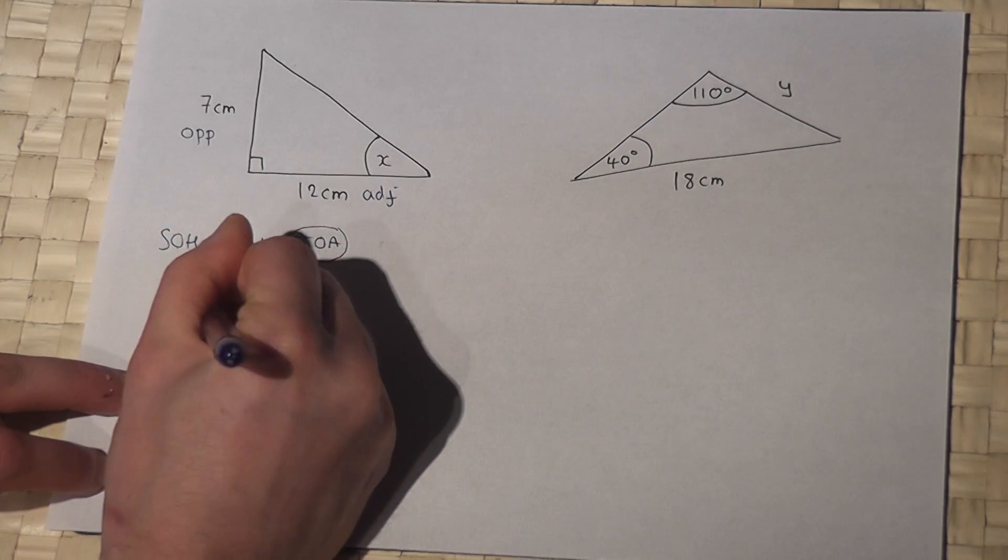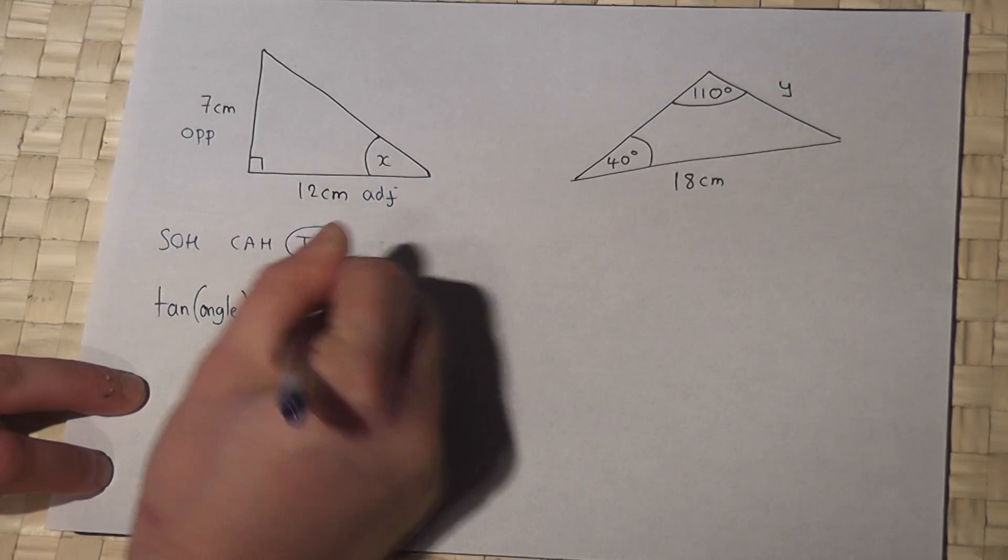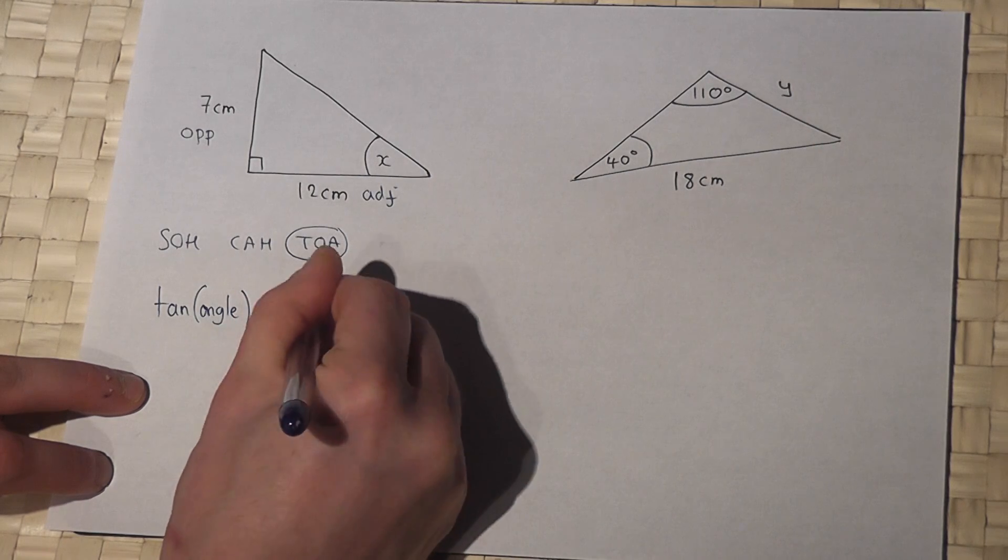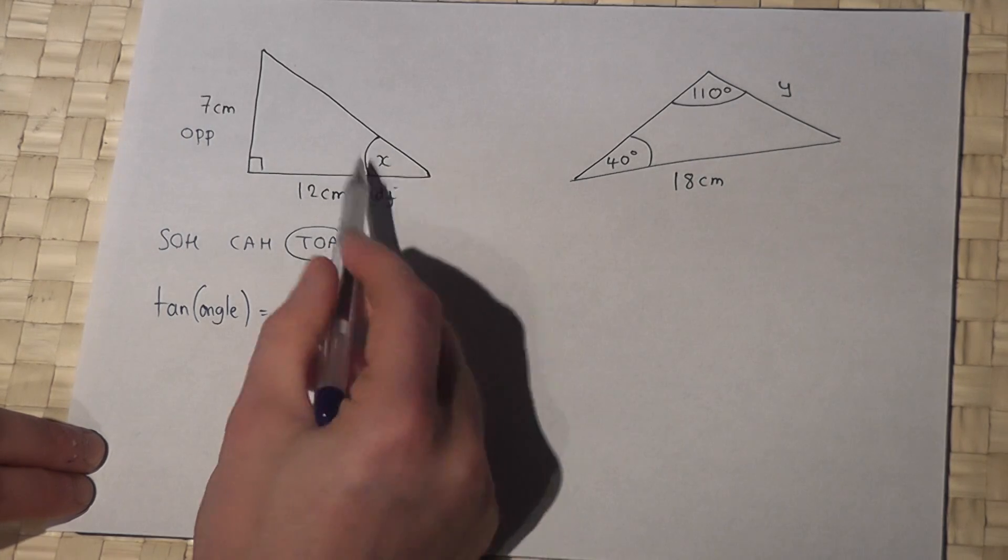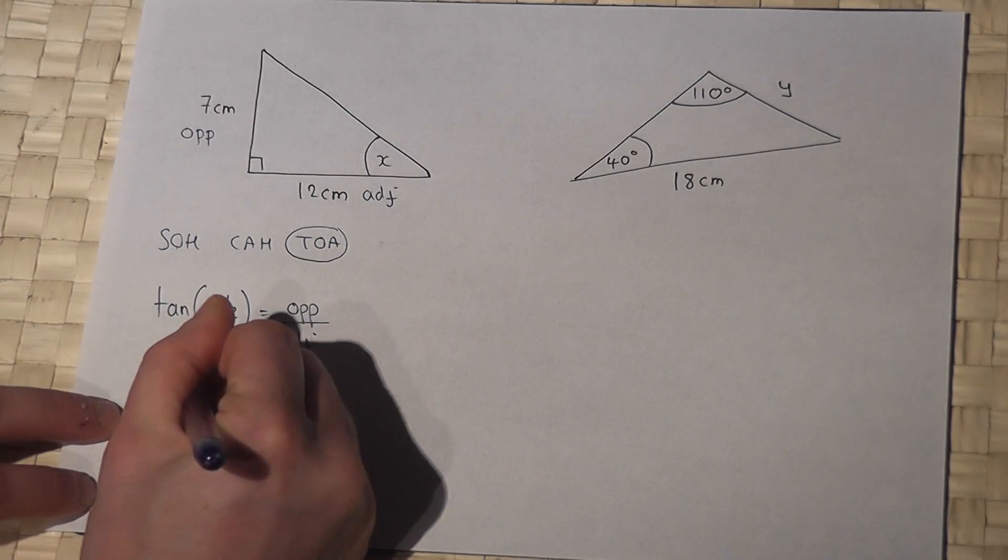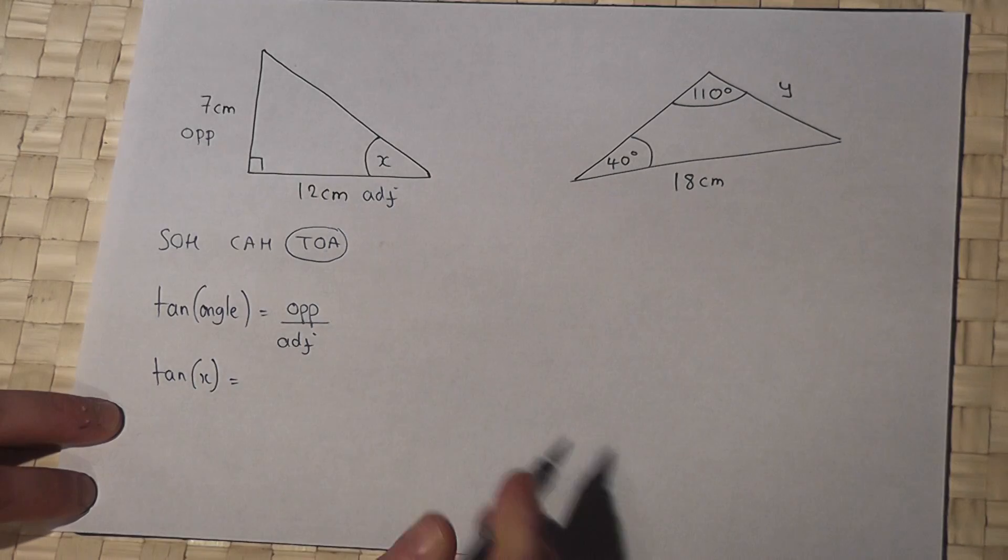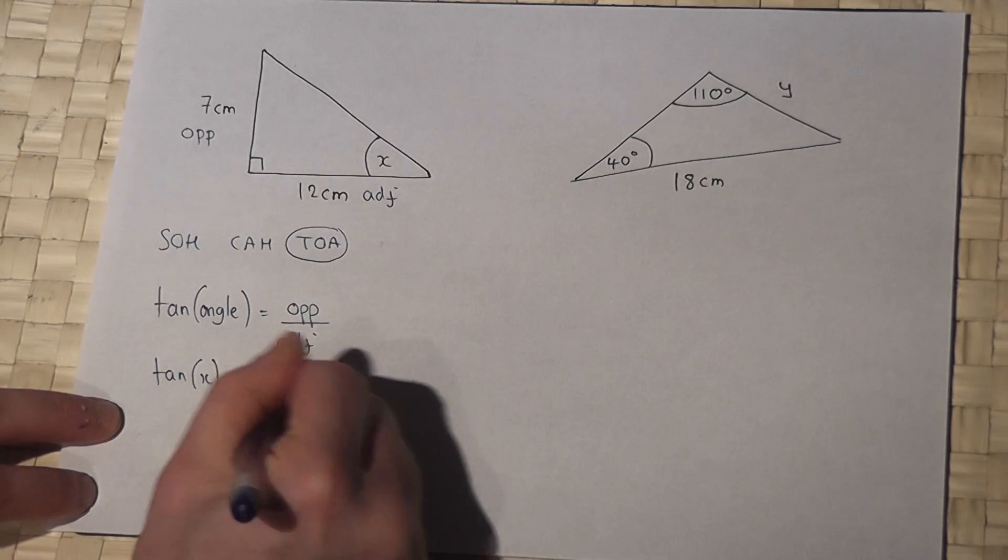Tan of the angle is equal to opposite over adjacent. Now then, my angles are known, so I've got tan of x and this must equal the opposite over the adjacent.